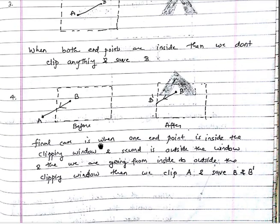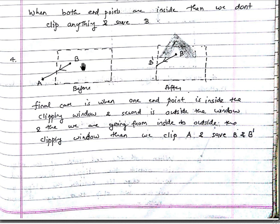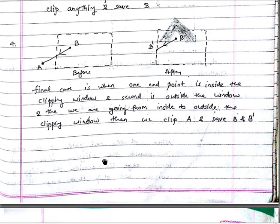Rule four: suppose one endpoint lies outside and one endpoint lies inside, and the edge is going from inside to outside. In that case, we clip the part of the edge until we reach the clipping window boundary and then save only A dash. This is how it looks after clipping when the window is there and the edge is going outside.